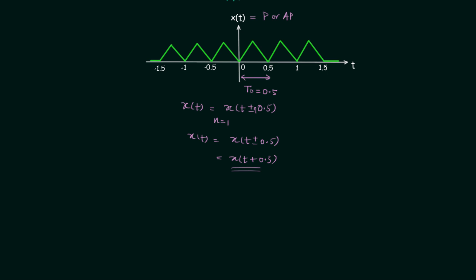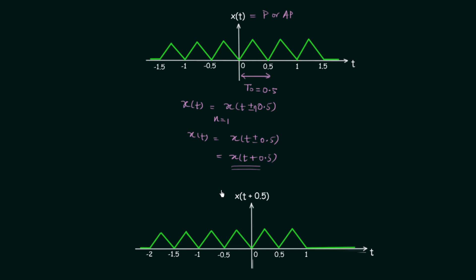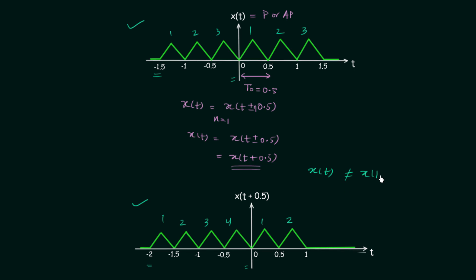We obtain the waveform of x(t + 0.5) and compare the two waveforms. In the shifted waveform, from −1.5 to 0 we have three triangular pulses and from 0 to 1.5 we have three triangular pulses. But in the original, from −2 to 0 we have four triangular pulses and from 0 to 1 we have two triangular pulses. This means x(t) is not the same as x(t + 0.5), so the signal x(t) is aperiodic.